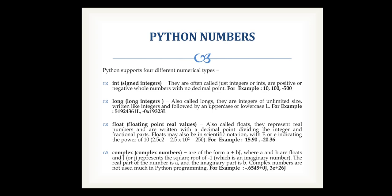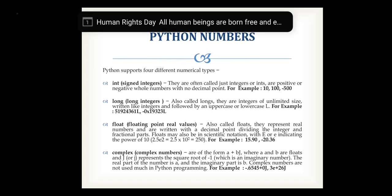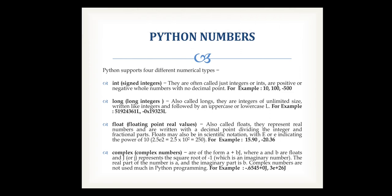Python supports four different numerical types. First is integer — it supports signed integers, either positive or negative. Next is long — used for integers with unlimited size, specified with the letter L in uppercase or lowercase. Next is float — stores decimal numbers, for example 15.90 or minus 20.36. When you assign a decimal value to a variable, it directly assigns a float data type.